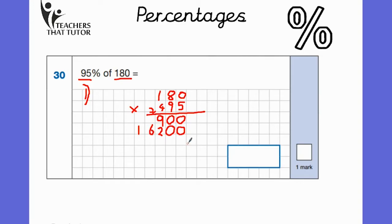Now we're going to add these two parts together. 0 add 0 is 0, 0 add 0 is 0, 2 and 9 make 11, so put 1 down and carry the 1. 6 and 1 is 7. And then 1 add 0 is 17,100.